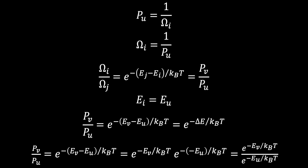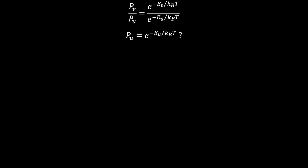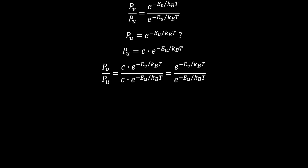At this point we have a nice expression for relative probabilities, but what about absolute probabilities? You might conclude that the probability of an individual state is just e raised to the negative energy of the state divided by kbT. But unfortunately, this isn't quite correct — if we multiplied this expression by some constant, we could end up with the same Boltzmann factor. The question remains as to what this constant factor is, and as a spoiler, it's unfortunately not 1. Let's call this constant 1 over q, where q is the partition function.